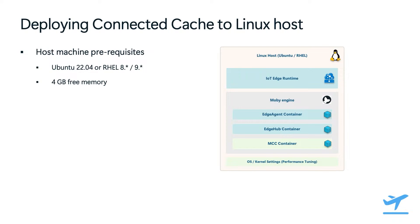Here we see a quick diagram of what it looks like when you deploy Connected Cache to a Linux host machine. Prerequisites for that host machine are it needs to be using either Ubuntu 22.04 or Red Hat Enterprise Linux 8 or 9, and have at least four gigs of free memory. On the outermost box you'll see your Linux host machine running one of those Linux distributions. Then you'll have the IoT Edge runtime, the Moby engine, and within the Moby engine is the Edge agent container, the Edge hub container, and finally the Connected Cache container. There are also OS and kernel settings configured on your host machine that optimize it for Microsoft Connected Cache performance.